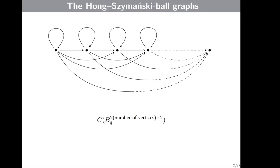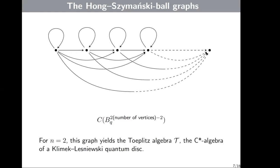The next example is the graph of Hong-Szymański. These balls are bounded by the action spheres defined on the previous slide, and for N equal to 1 this graph yields the Toeplitz algebra T and the C*-algebra of the Klimek-Leśniewski quantum disk.